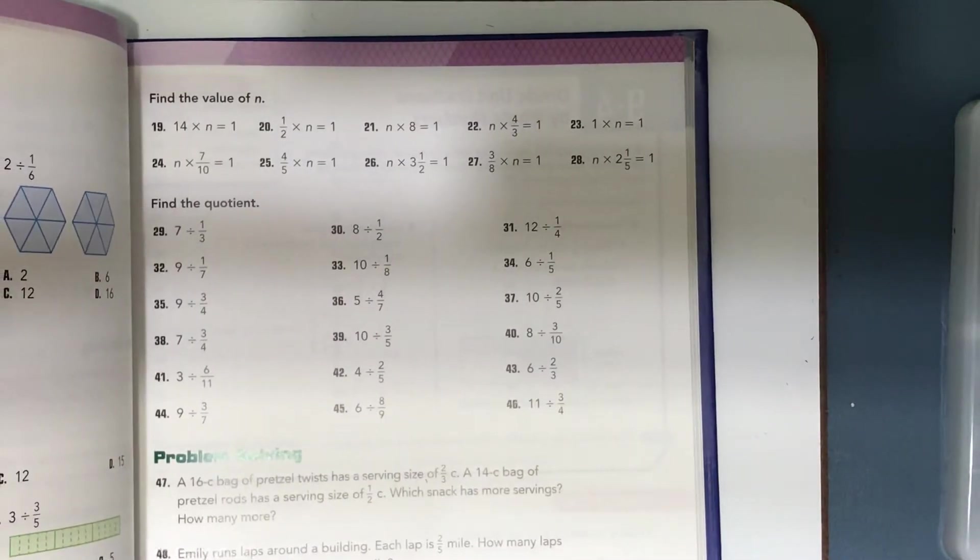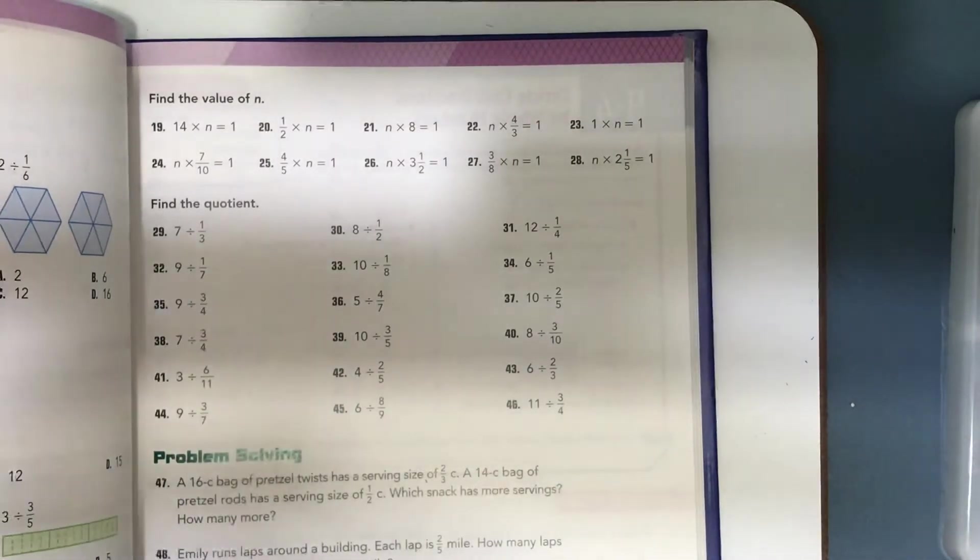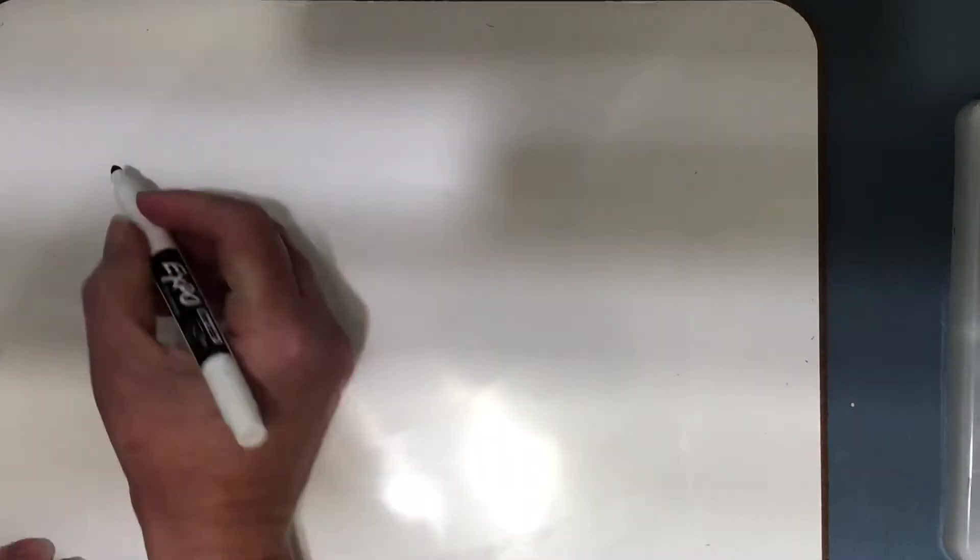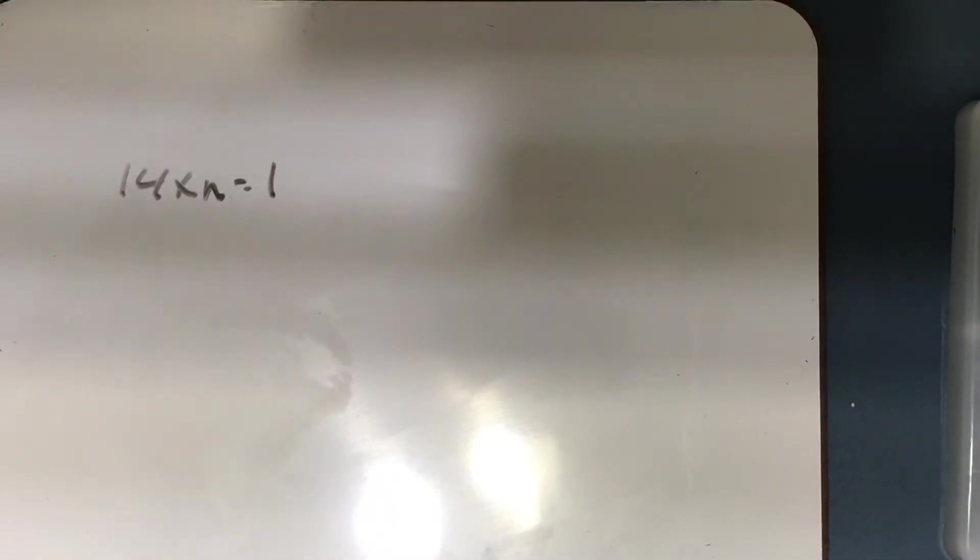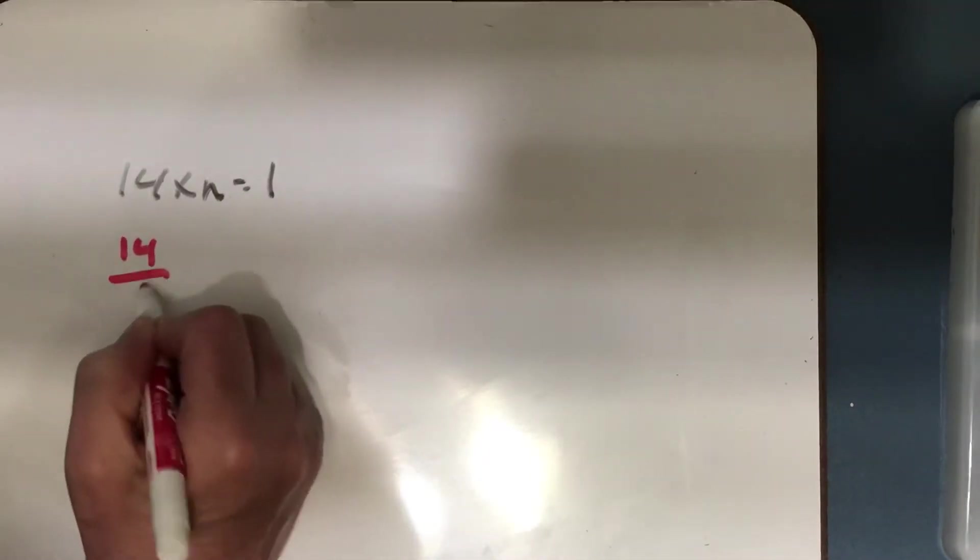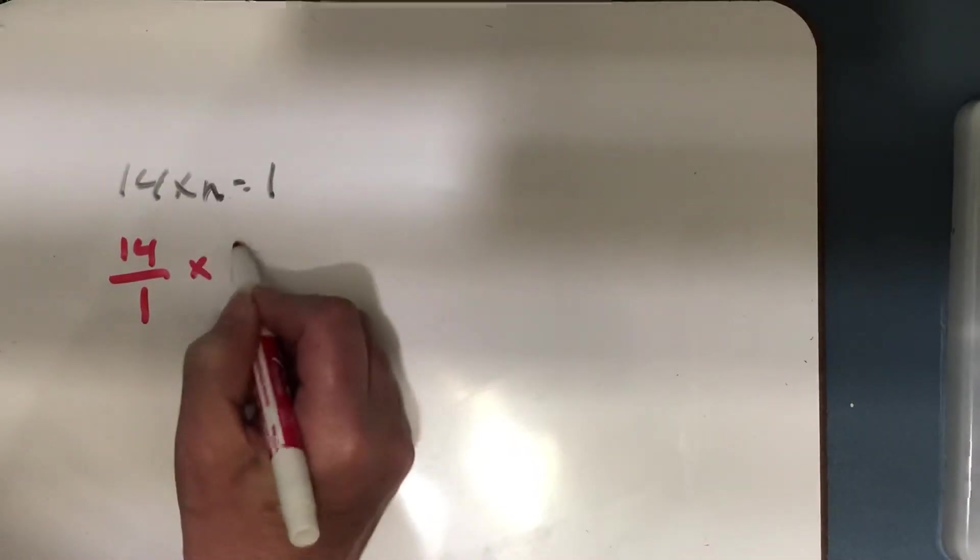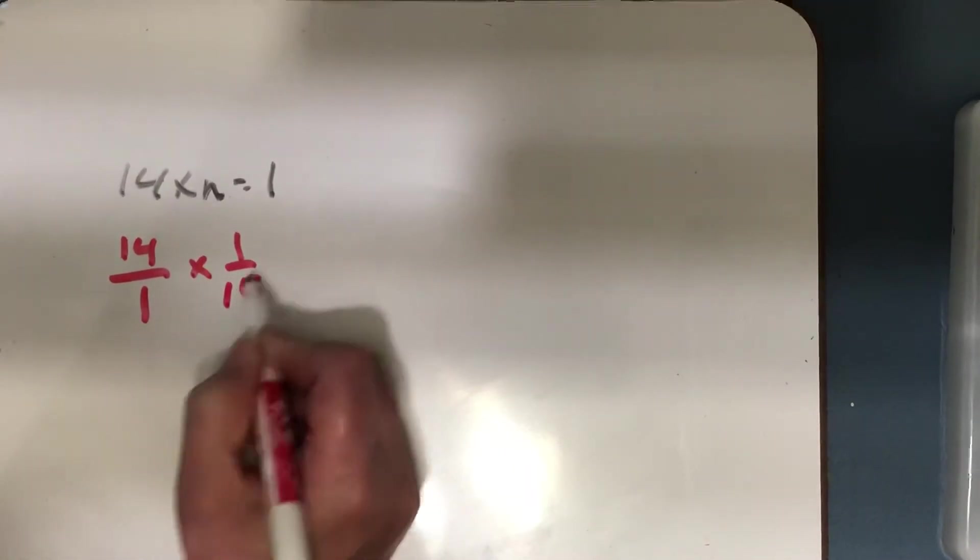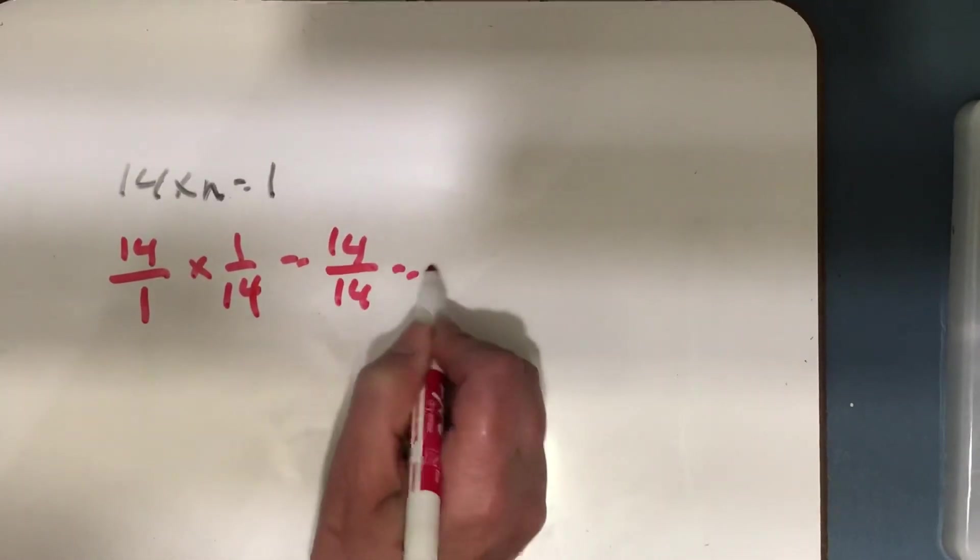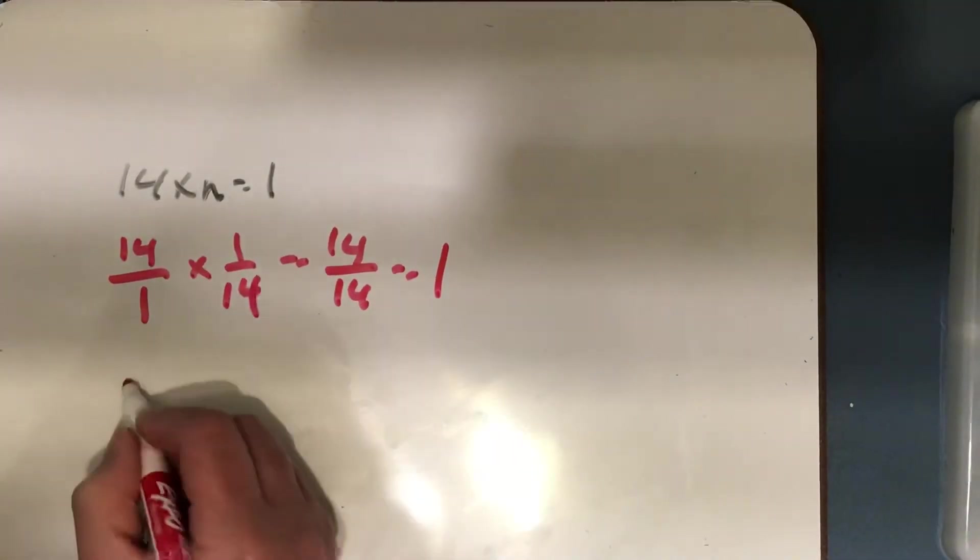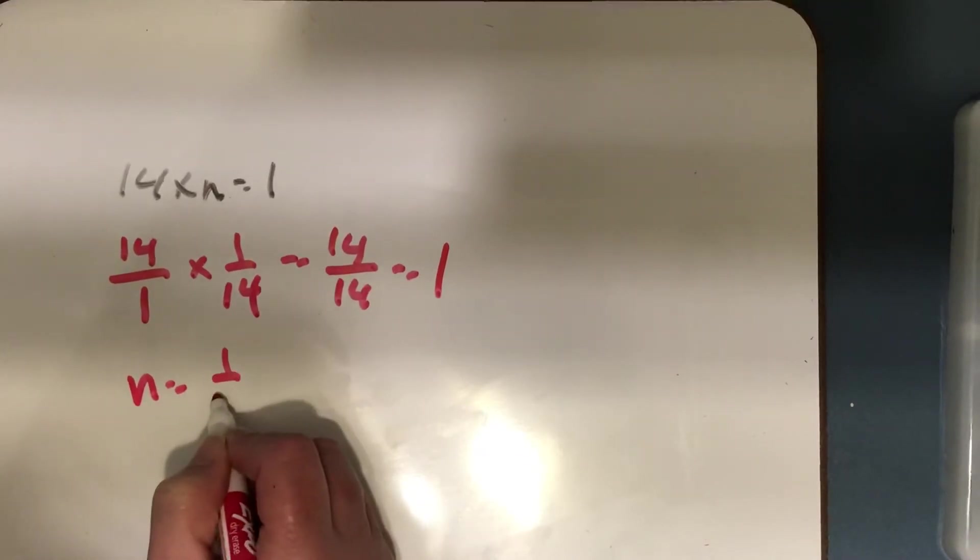Because remember, reciprocals are numbers that I can multiply by each other to get one whole. So remember, 19 says 14 times n equals 1. So I know that the reciprocal of a whole number is a unit fraction. Because 14, I can write as 14 over 1 times 1/14. So 14 times 1 equals 14, 1 times 14 is 14. So that equals 1. So n equals 1/14.